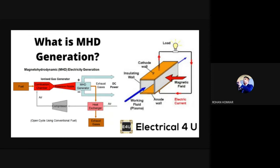In MHD power generation, there are two types: one is open cycle and another is closed cycle. In the open cycle, we use air — the diagram shows air and heat mixture being used and then reused again. This covers the basics of MHD power generation.